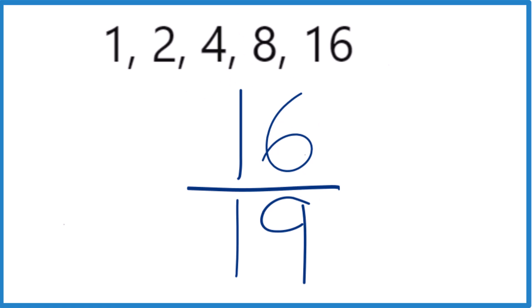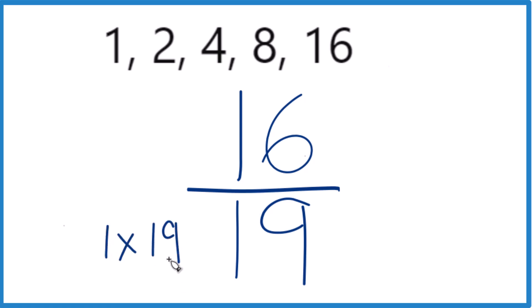For 19, though, the only factors that we have are 1 times 19. That equals 19, but there isn't anything else.